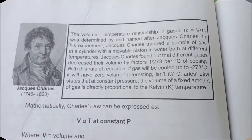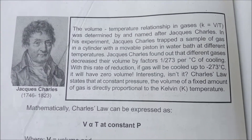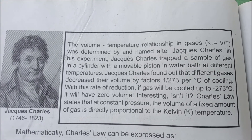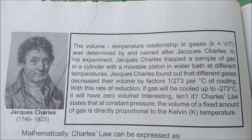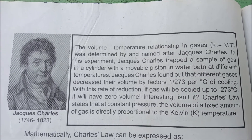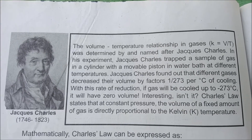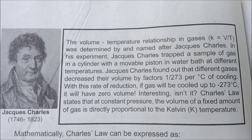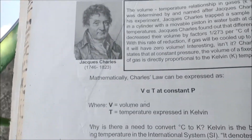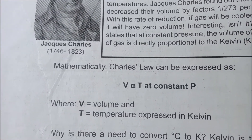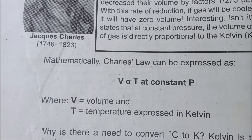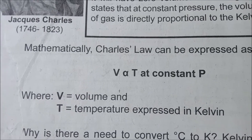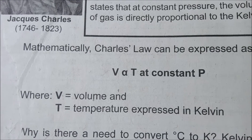Let's have Charles' Law. Charles' Law states the volume-temperature relationship in gases. It was determined by and named after Jacques Charles. In his experiment, Jacques Charles dropped a sample of gas in a cylinder with a movable piston in a water bath at different temperatures. Mathematically, he expressed this relationship as: volume is directly proportional to temperature at constant pressure. V is volume, while T should be expressed in Kelvin.